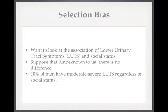The first type of bias we're going to look at is selection bias, and we will use a made-up example to illustrate it. Imagine you were designing a study to look at whether there is an association between lower urinary tract symptoms in men and social status. Imagine that, unbeknown to us, there really is no association in the general population. We don't know that, and we're going to design a study that will demonstrate how bias can give us an erroneous result. In the general population, 10% of men have moderate or severe lower urinary tract symptoms regardless of their social status.